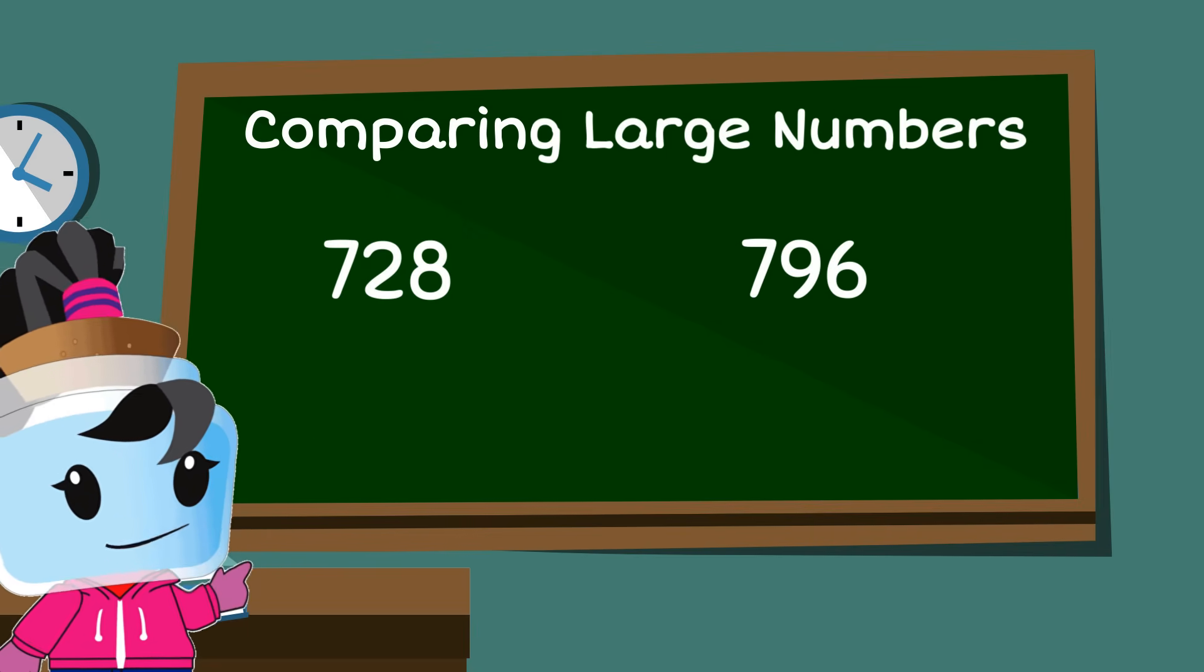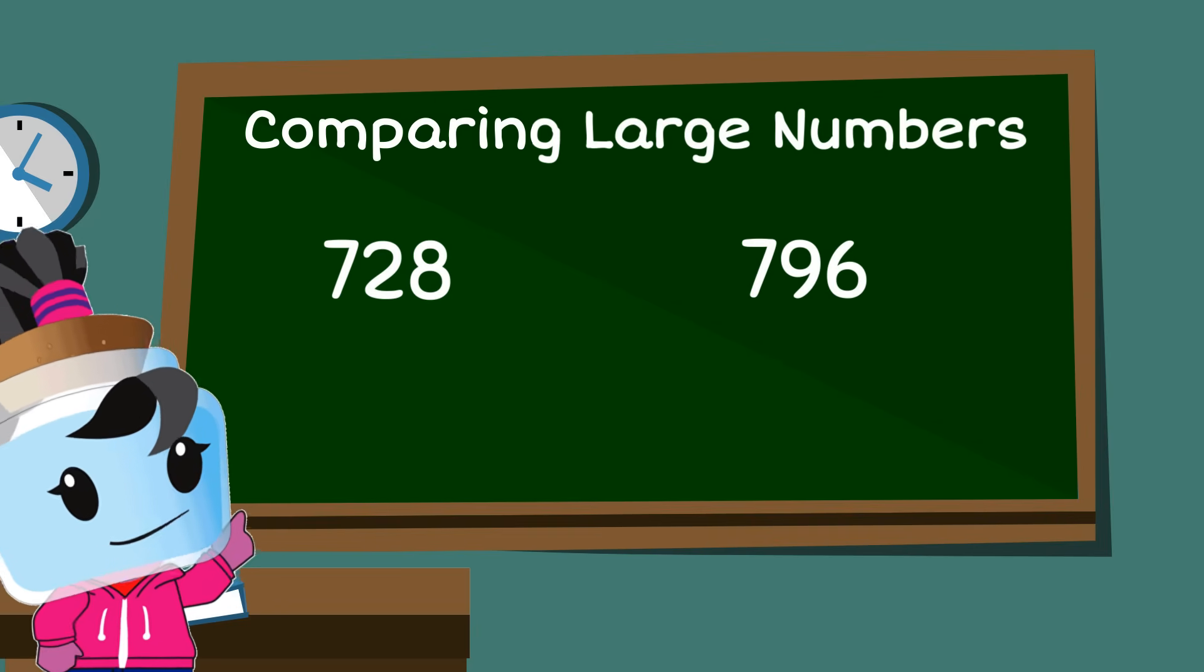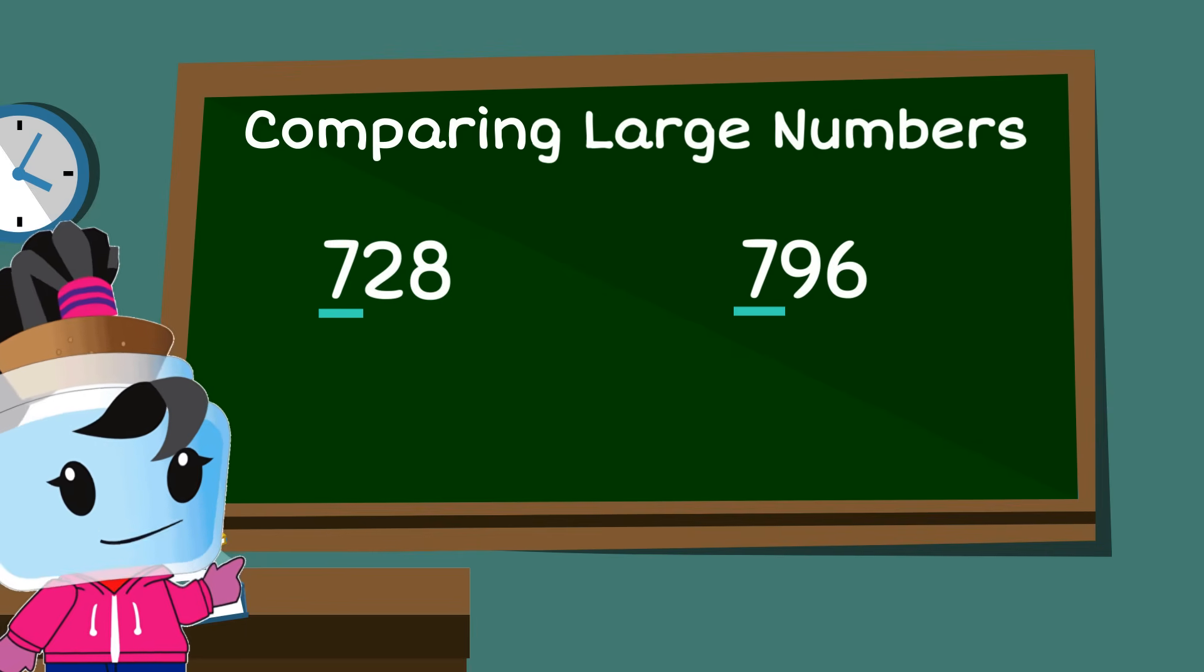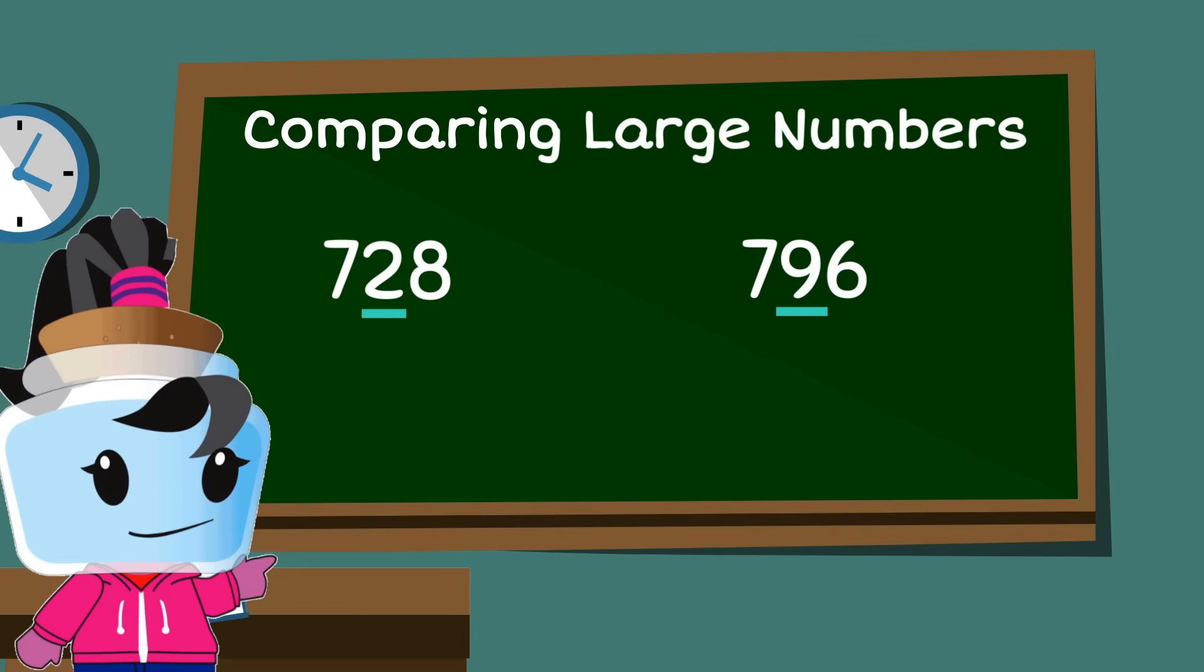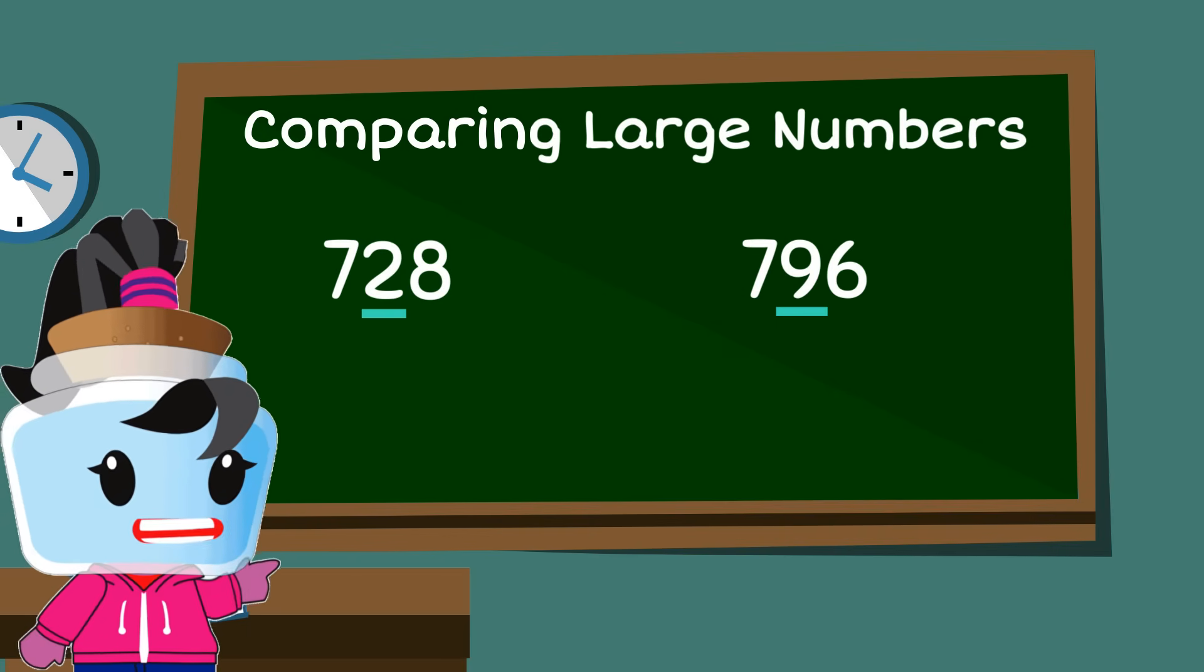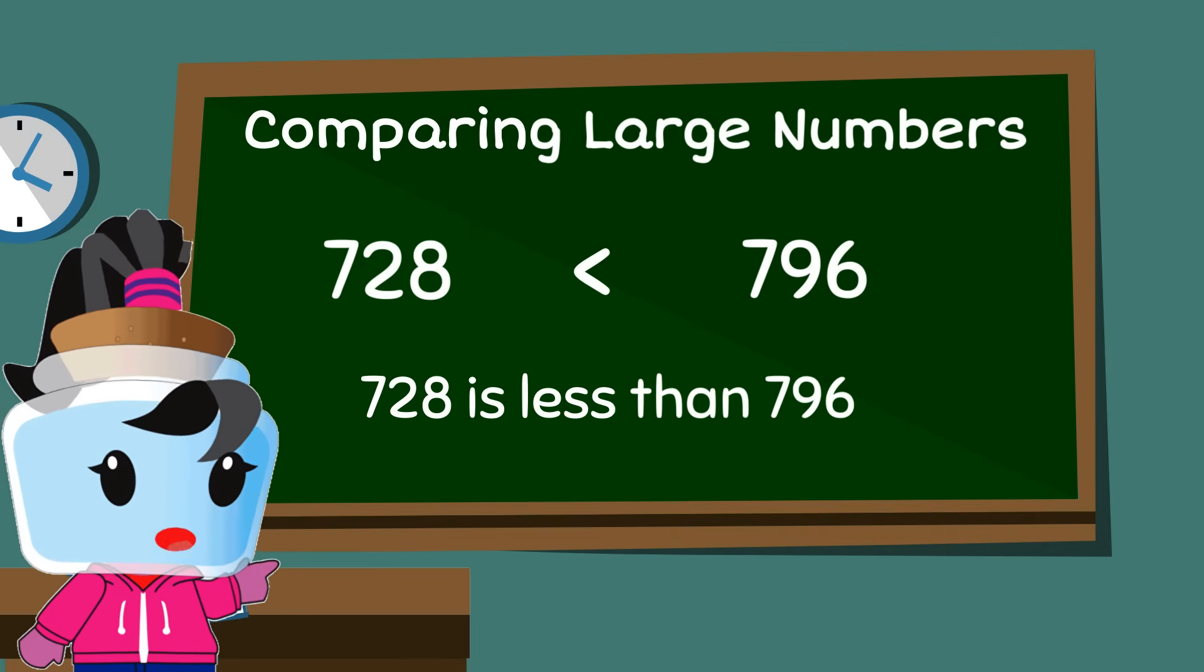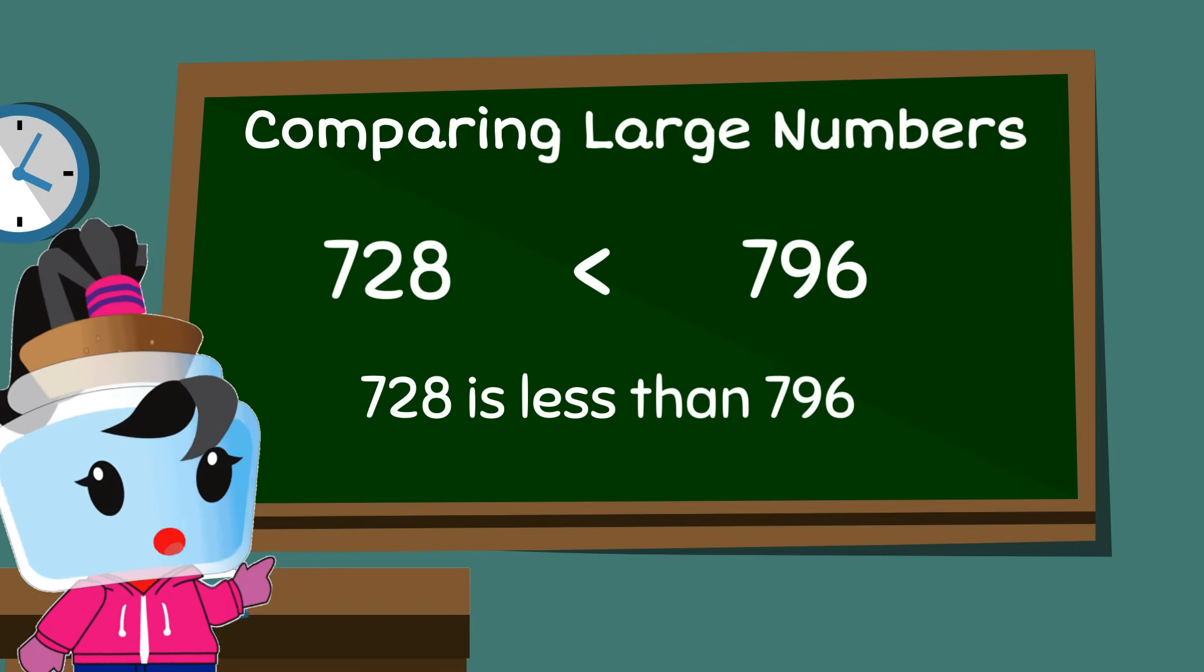Can you help me compare 728 and 796? Again, start with the hundreds place. Since both are seven, let's move to the next place value, which is tens. Let's compare 2 and 9. Clearly, 2 is less than 9. That means 728 is less than 796. Easy, right?